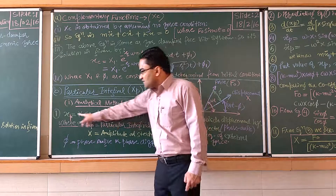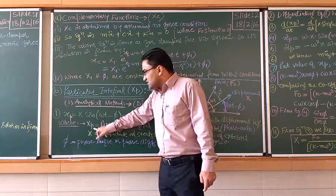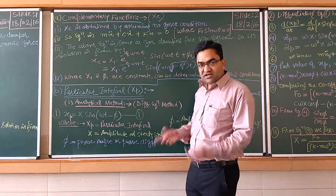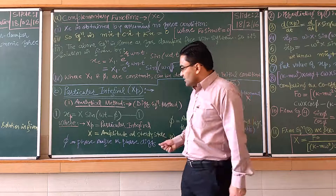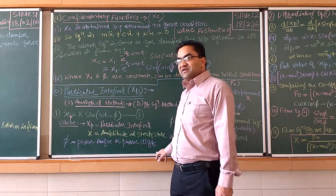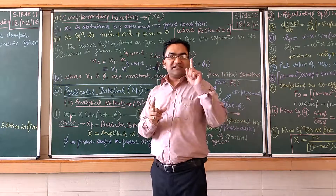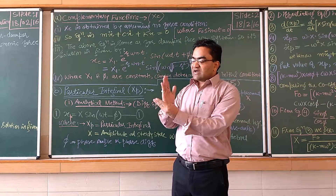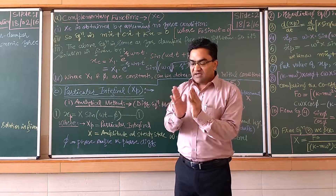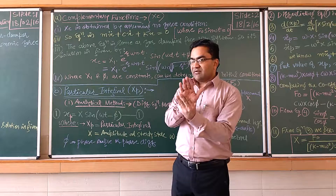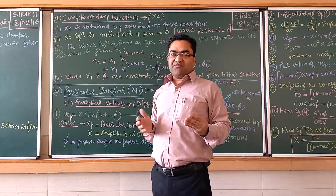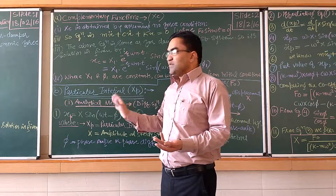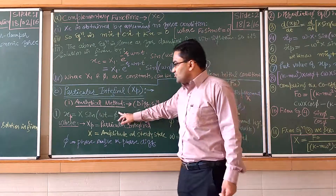In this equation, Xp is the particular integral, capital X is the amplitude at steady state — the steady-state amplitude, and φ is the phase angle or phase difference between the excitation force and the displacement. The force leads the displacement by an angle φ. As shown graphically, the force vector leads the displacement vector by the angle φ, and this is known as the phase angle or phase difference.